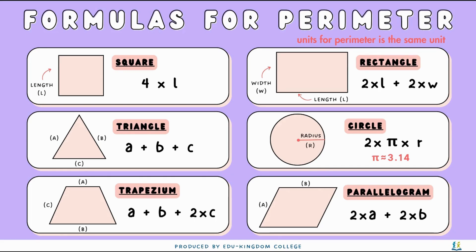For a trapezium, the two slanted sides are going to be the same, so the two c's are times 2, and then we add the top and the bottom — a and b. So the formula for the perimeter of a trapezium is a plus b plus 2 times c. For a parallelogram, the opposite sides are the same length, therefore it's 2 times a plus 2 times b.